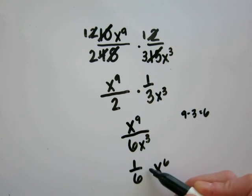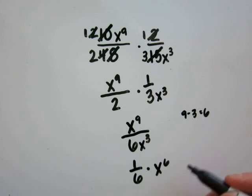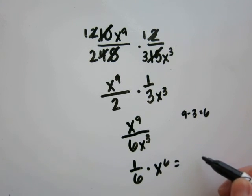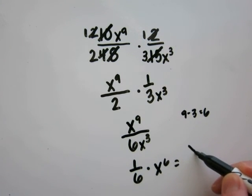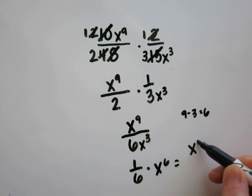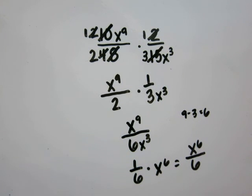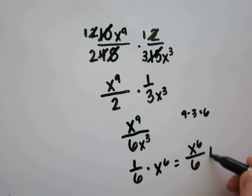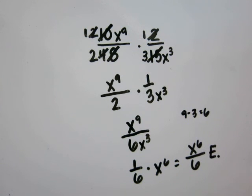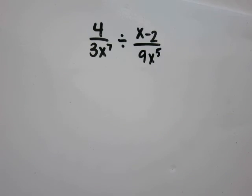That's 1 over 6 times that, which can be rewritten as x to the 6th power over 6. Looking at the selections, this is the same as letter E. Problem 16.